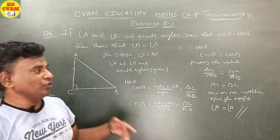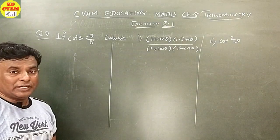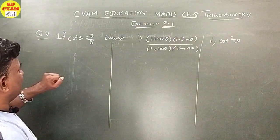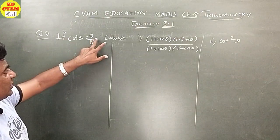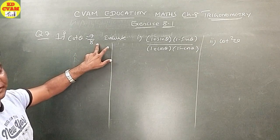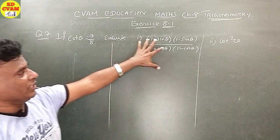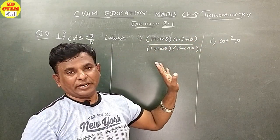Let's go to the next sum. Question number 7: if cot theta is equal to 7 upon 8, evaluate the given expression.